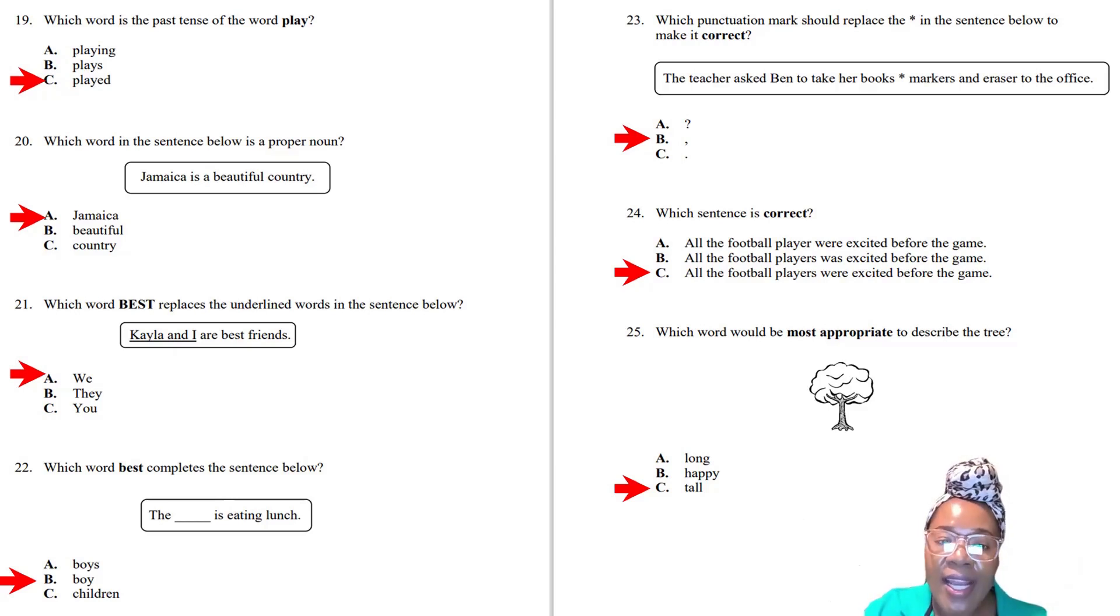Question twenty-one: Which word best replaces the underlined words in the sentence below? 'Kayla and I are best friends.' We are best friends, they are best friends, you are best friends. They're so close, but the one that best replaces it is 'we.' That's what the government is saying.